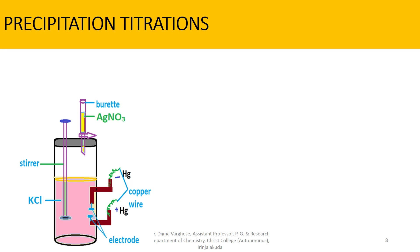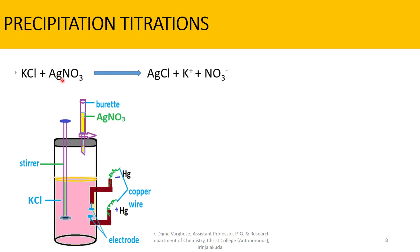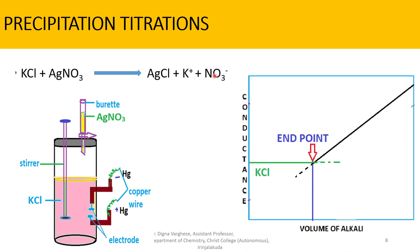Precipitation titrations: Many titrations which involve precipitate formation can be followed conductometrically. Consider the titration of a known volume of potassium chloride taken in the conductivity vessel against silver nitrate solution added from the burette. The reaction is: KCl + AgNO3 → AgCl↓ + KNO3. Since silver chloride gets precipitated, the chloride ions in solution are progressively replaced by NO3- ions. Since the NO3- ion has nearly the same mobility as Cl-, the conductance of the solution practically remains constant.